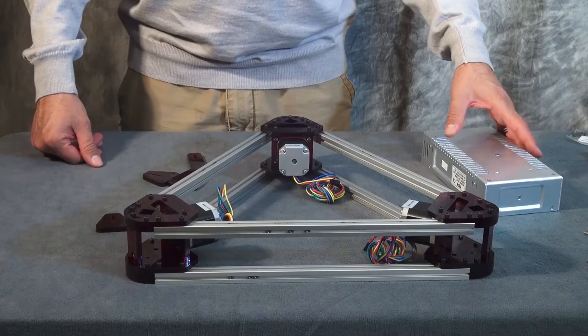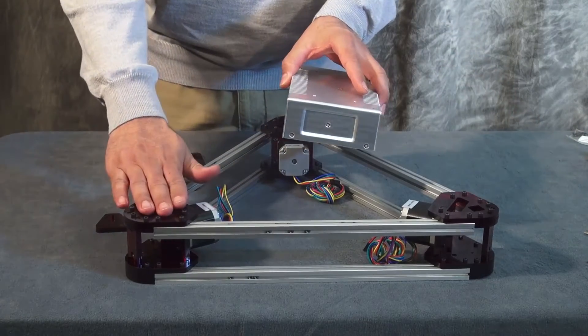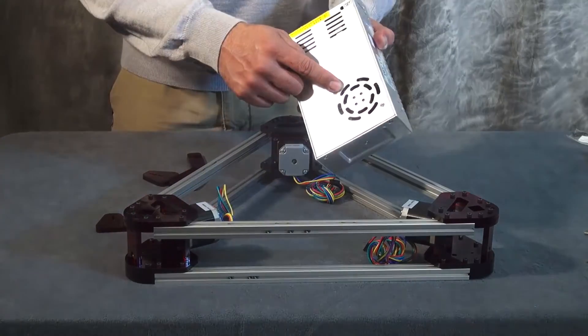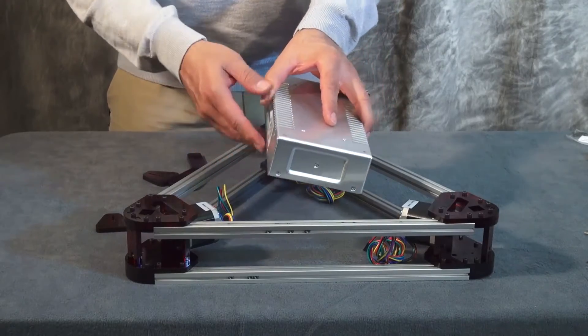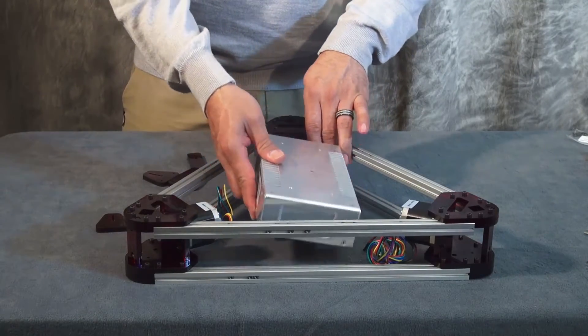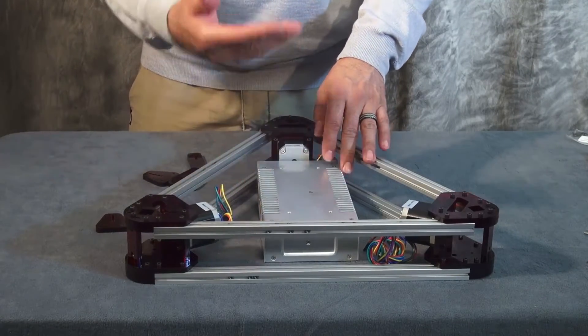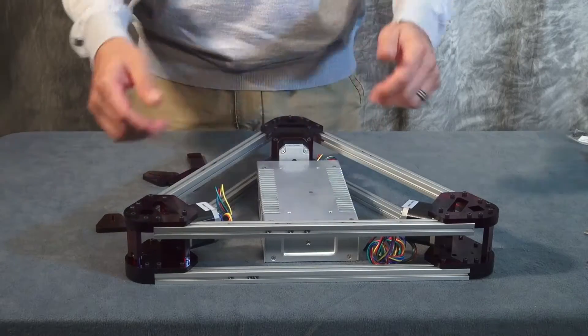Alright, now time to mount the power supply. This being the top of your base, you're going to have the fan pointing down, away from your print bed. It's going to be blowing all the hot air down so you don't want that blowing up on your print bed.